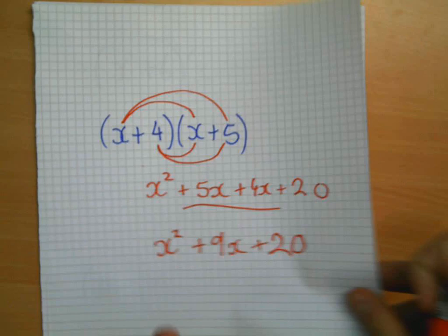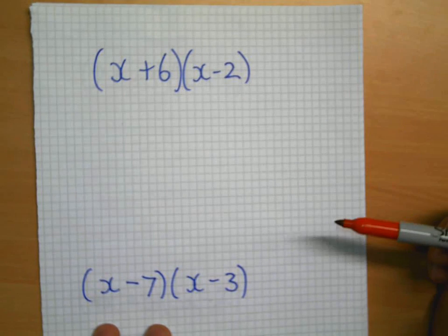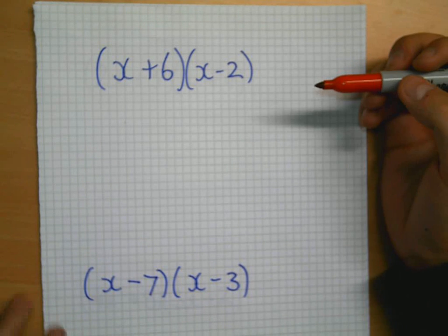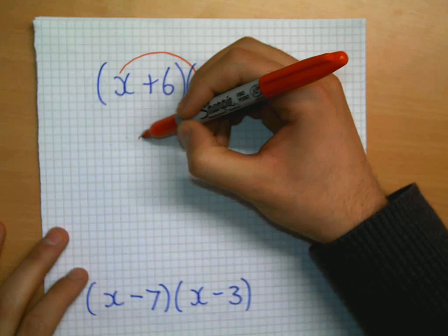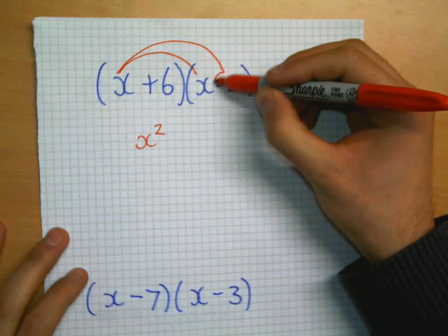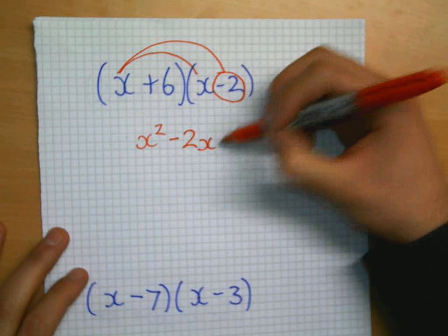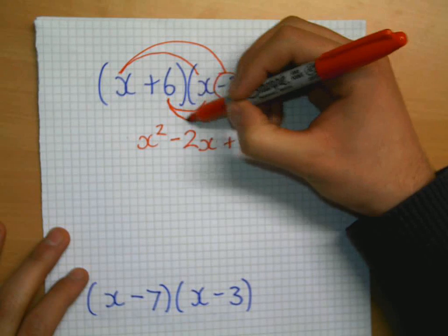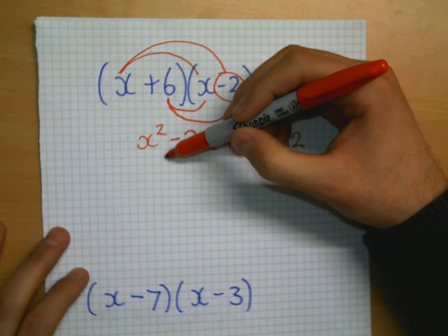Now, to make it a little bit more difficult. This time I've made a change. There's a negative in them. Whenever we see negatives, we know we have to be very, very careful. It is still, though, exactly the same process. So, x times by x is x squared. x times by minus 2 will give me minus 2x. 6 times by x will be positive 6x. And 6 times by minus 2 will be minus 12.